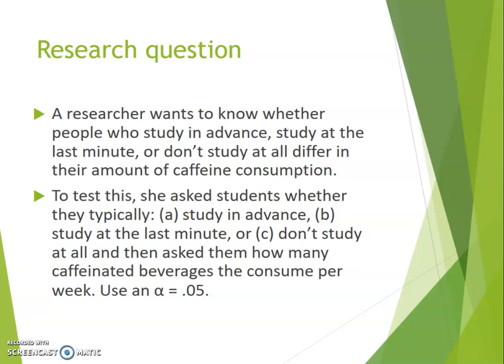We wouldn't be able to do a t-test to answer this question because we are comparing three different groups to each other — three levels on our factor. Our factor of whether people are studying in advance or not has three levels: studying in advance, studying at the last minute, and not studying at all. Since there are three groups being compared, we have to do an ANOVA.